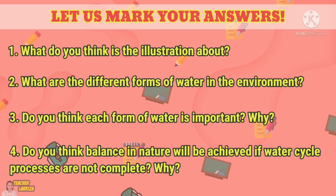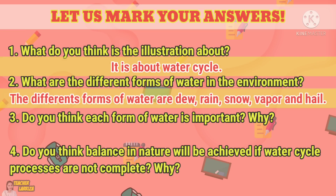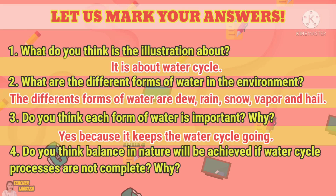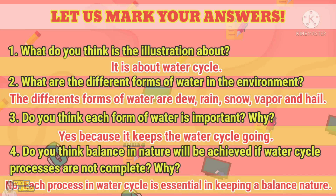Let us mark your answers. For number 1, the correct answer is: it is about the water cycle. 2. The different forms of water are dew, rain, snow, vapor, and hail. 3. Yes, because it keeps the water cycle going. And for number 4, the answer is no — each process in the water cycle is essential in keeping a balanced nature. Did you get all the answers correct? Excellent!